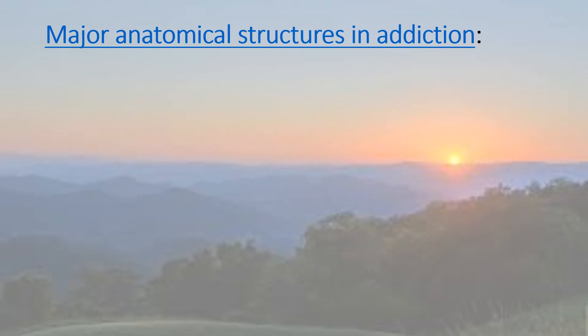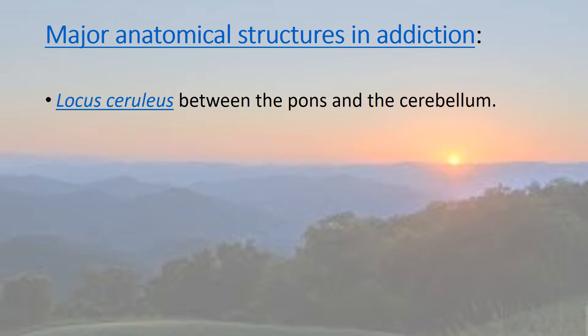The locus coeruleus is between the pons and the cerebellum. There are many changes in this part of the brain that happen with those prone to addiction. These changes are passed along genetically.